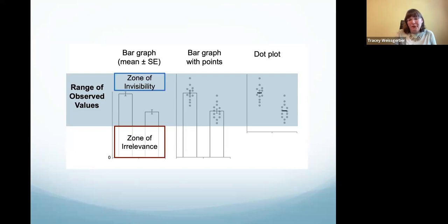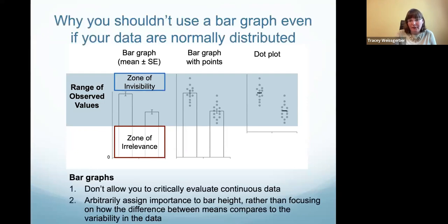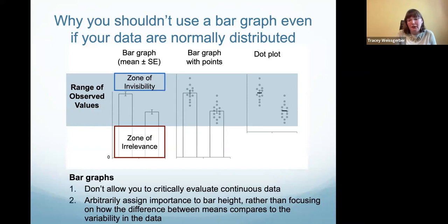That's what I would do for a figure in a paper. If I were sharing it in a talk or on social media, I might add additional text to explain the figure and further highlight the main message. My title might be 'Why you shouldn't use a bar graph even if your data are normally distributed,' with an explanation below that bar graphs don't allow you to critically evaluate continuous data, and that they arbitrarily assign importance to bar height rather than focusing attention on overlap between groups and how the difference in means compares to variability.